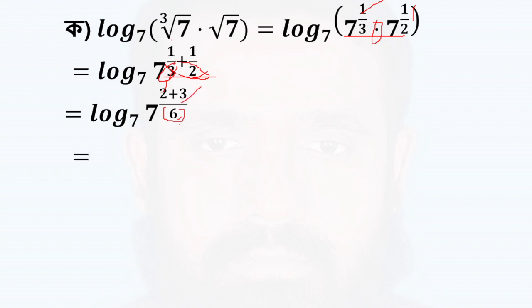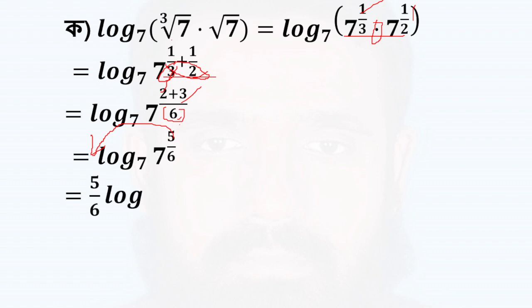We have 5 by 6. Then 5 by 6, and 5 by 6 with a 7. This is 1 by 7.